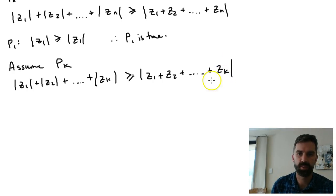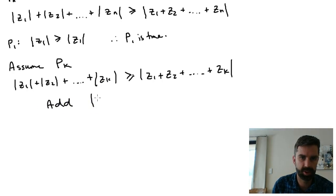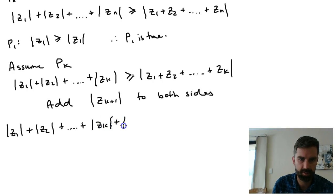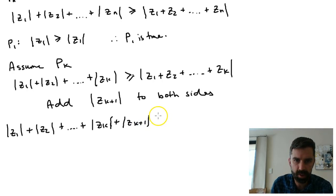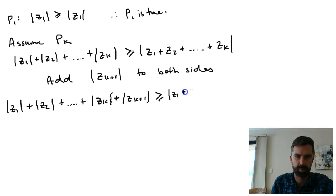Instead of writing out P(k+1) explicitly, I'm going to work towards P(k+1) from P(k). You might remember that when dealing with inequality proofs by induction, that's often a really nice way to go. So what I'm going to do is add the modulus of z_{k+1} to both sides, so the left hand side becomes |z1| + |z2| + ... + |z_k| + |z_{k+1}|, and that's greater than or equal to |z1 + z2 + ... + z_k| + |z_{k+1}|.